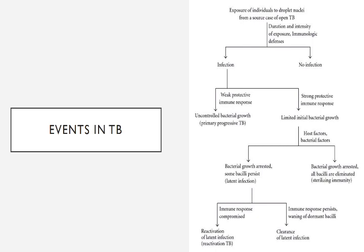If the bacterial growth is arrested and all the bacilli are eliminated, this is called sterilizing immunity. If the bacterial growth is arrested but some bacilli persist, then this is the case of latent infection. If the immune response is compromised, then reactivation of latent infection occurs. If the immune response persists and waning of dormant bacilli occurs, then clearance of latent infection occurs.